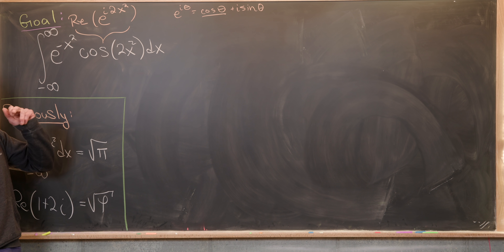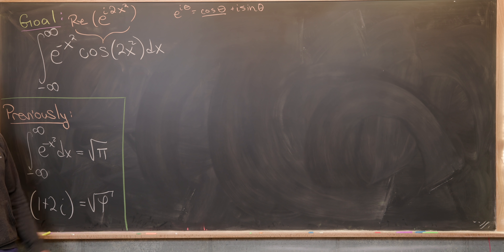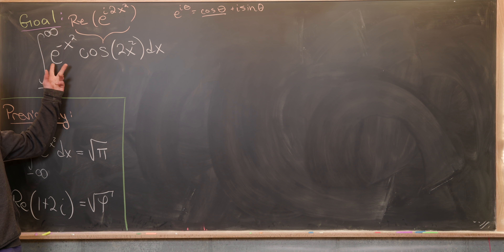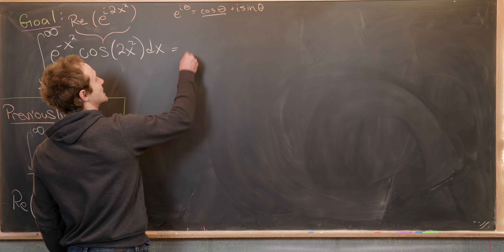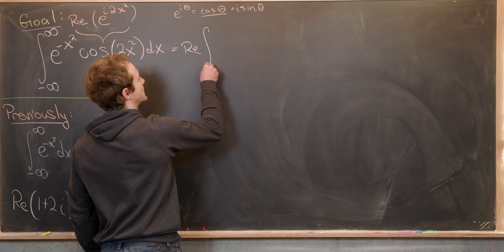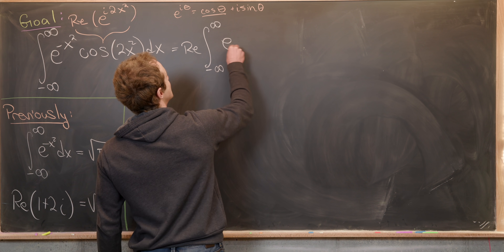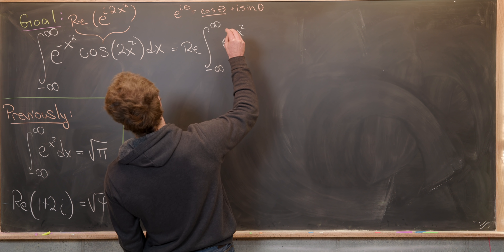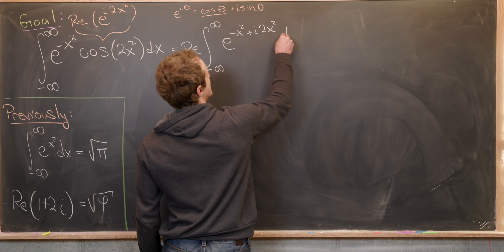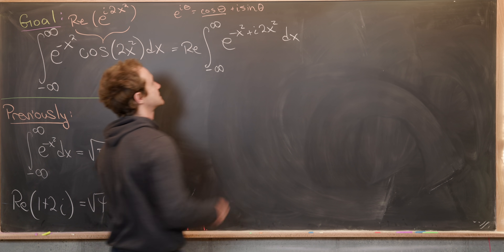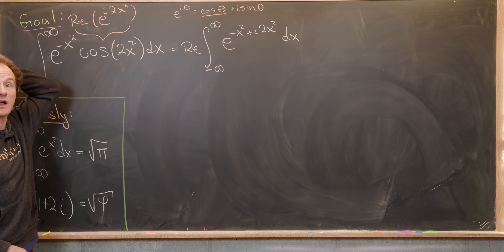We're in luck because e to the minus x squared is always real, so we can actually bring this e to the minus x squared inside. That gives us the real part of the integral from minus infinity to infinity of e to the minus x squared plus i times 2x squared dx, where we've used exponent rules to combine those two exponential objects.